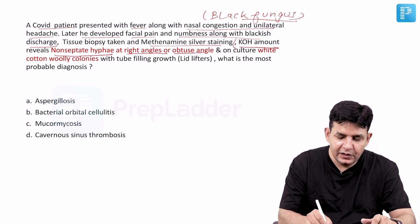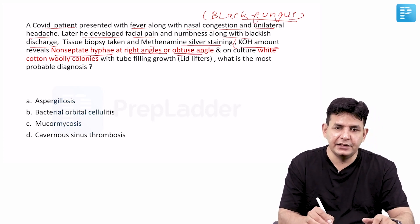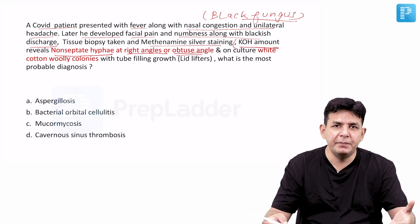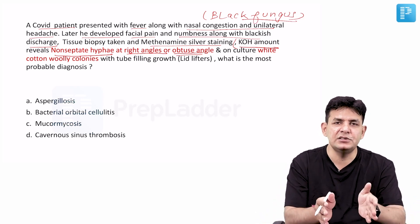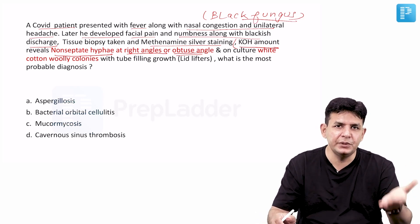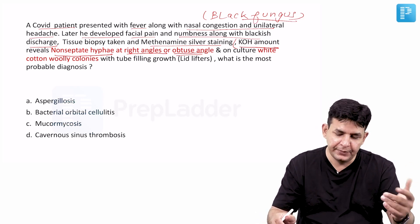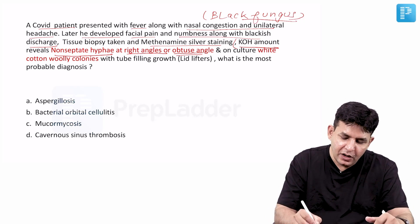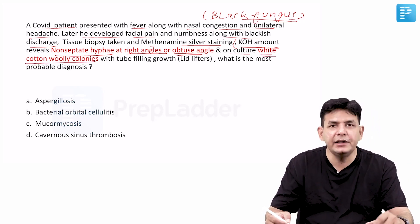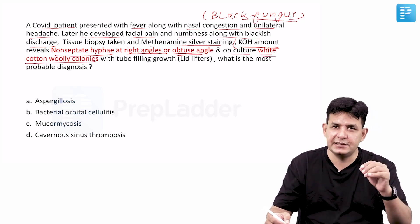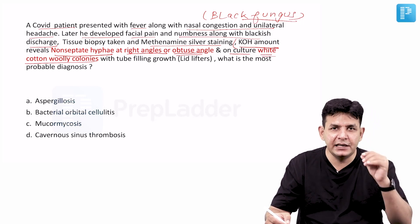The hyphae branch at right angles or obtuse angles, typical of mucormycosis — that is, zygomycosis. Zygomycosis consists of Rhizopus, Mucor, and Absidia. On culture, you observe white cotton woolly colonies. These organisms are termed 'lid lifters.'